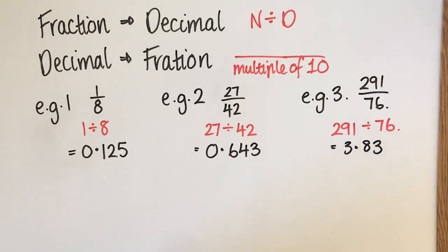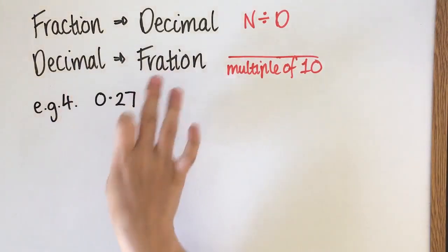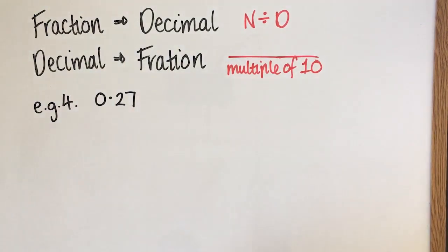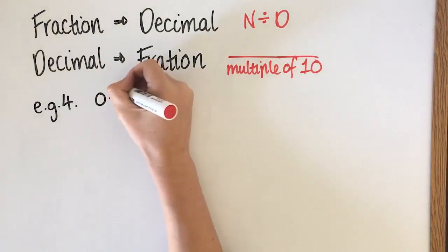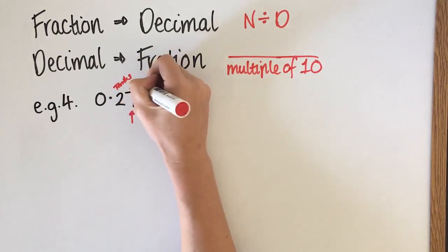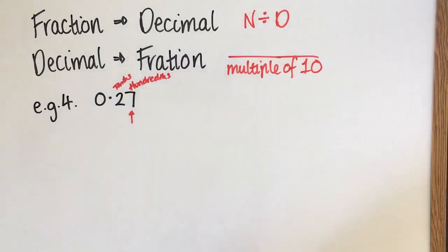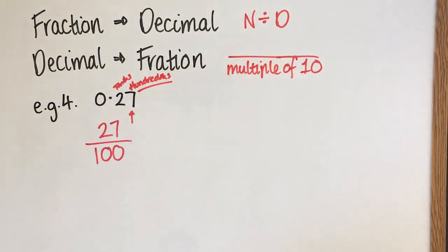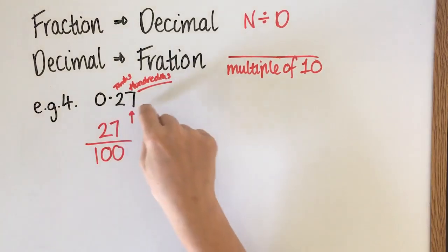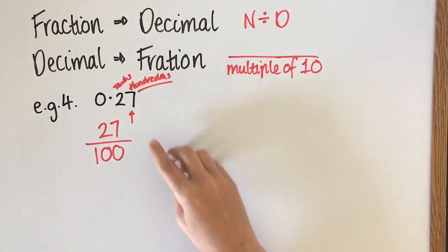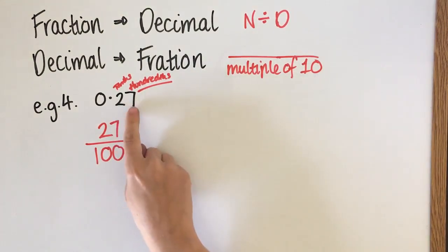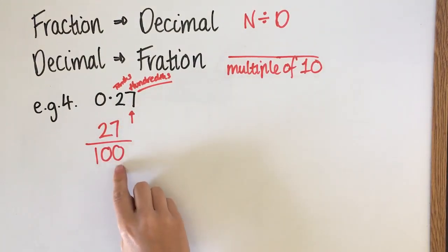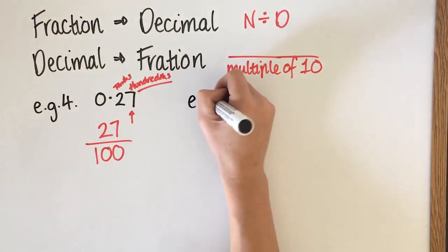Now I'm going to show you how to do a decimal to a fraction. Our first example is 0.27. This decimal goes to the tenths and then the hundredths place. Since our number goes out to the hundredths, we put it over 100. So 0.27 becomes 27 over 100. A quick tip: there are two digits after the decimal point, so you need two zeros in the denominator.